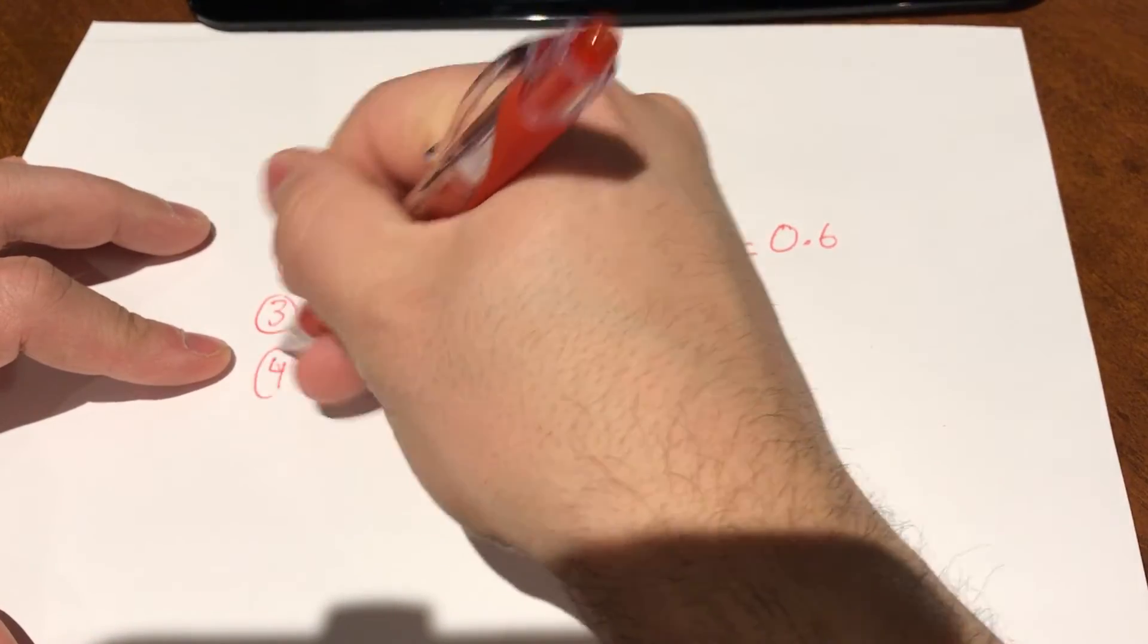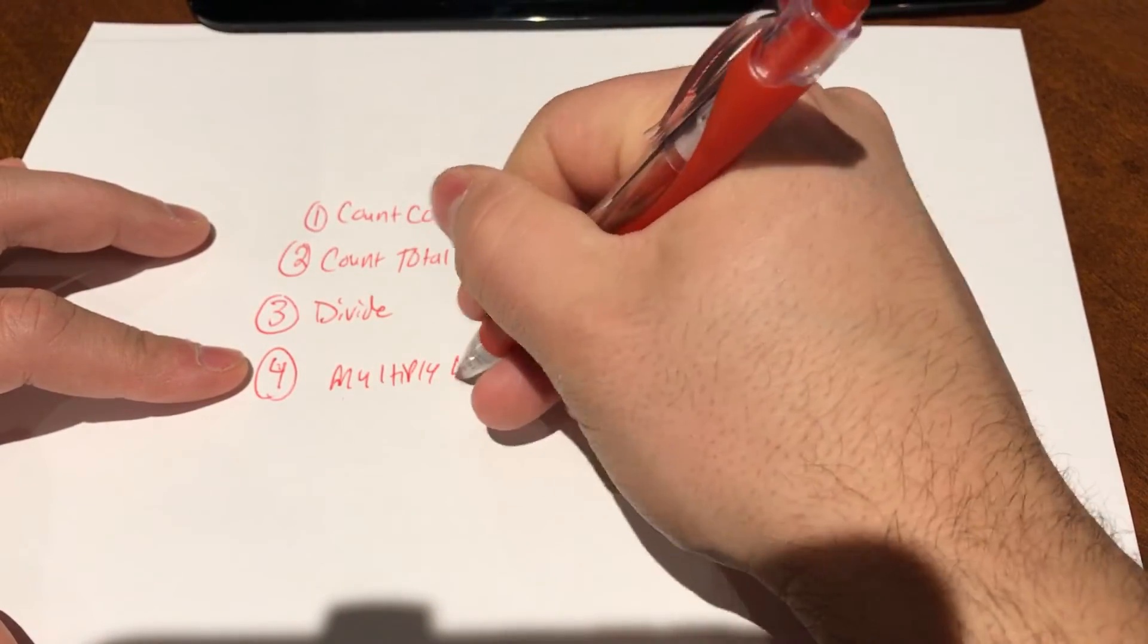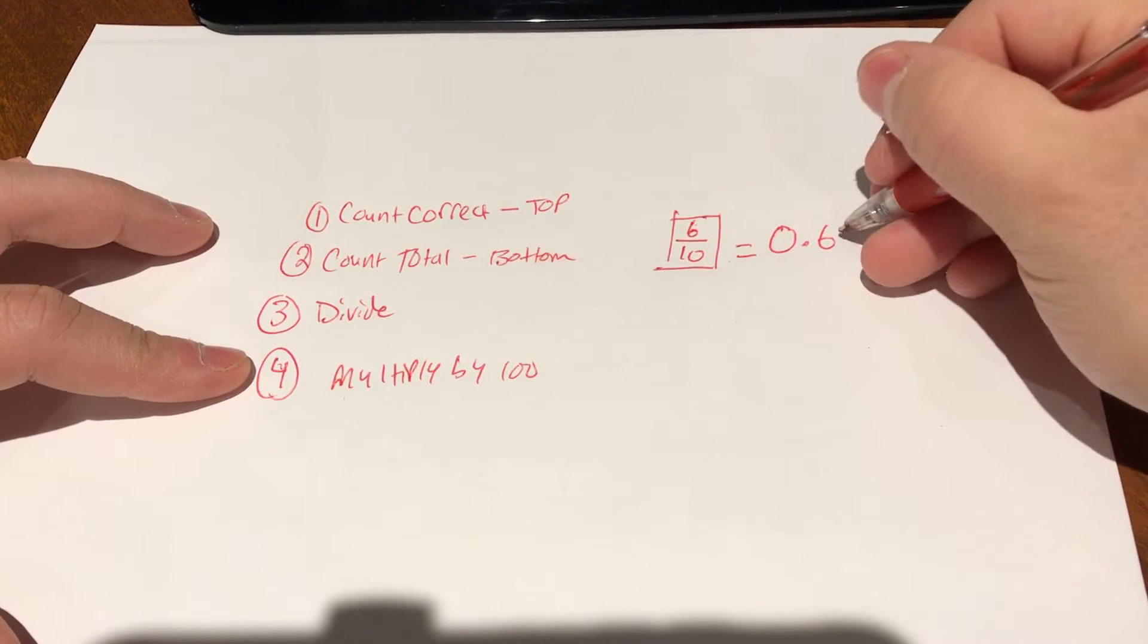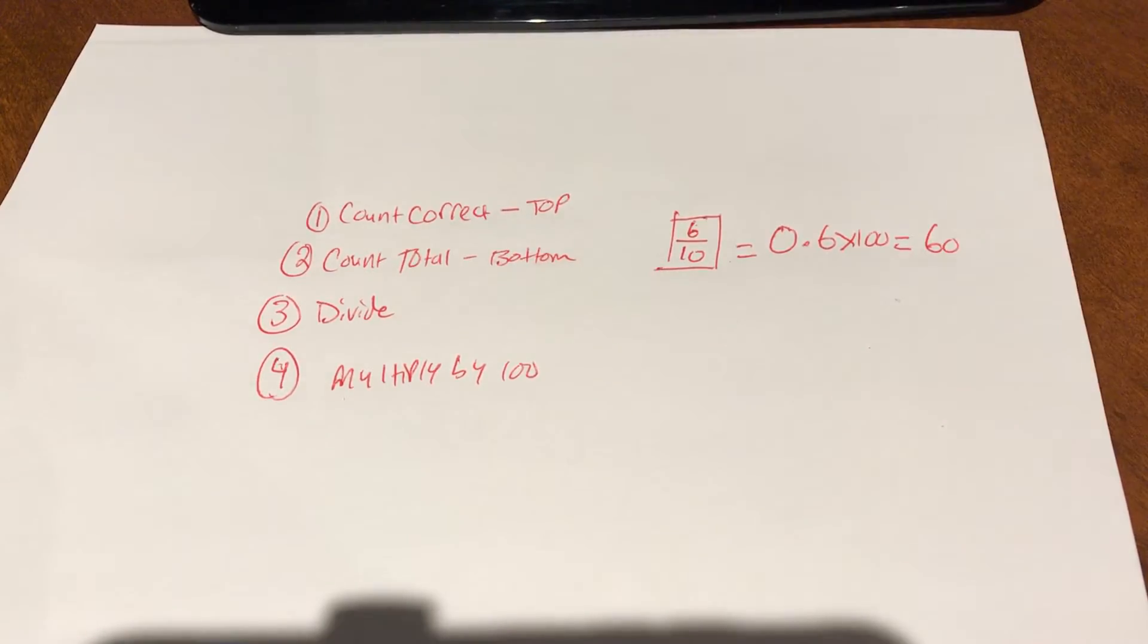Step number four is you're going to multiply by 100. So you're going to take this answer, you're going to multiply it by 100, and in this case it's going to equal 60.